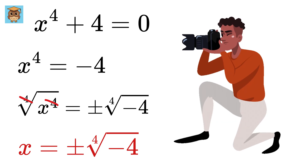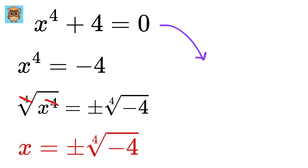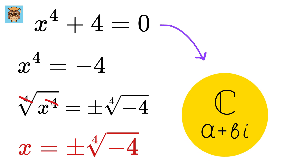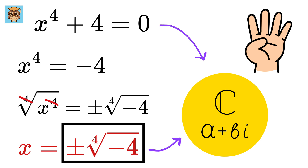It doesn't give us the full picture of the solution, because this equation involves complex numbers. When you take the fourth root of a negative number, you're stepping into the world of imaginary numbers, and there's more than one possible solution. In this case, there will be 4 possible values of x.